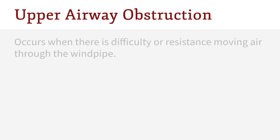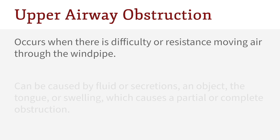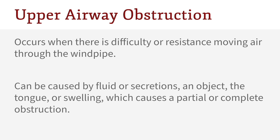Let's review a few definitions. Upper airway obstruction happens when there is difficulty or resistance when air is moving through the windpipe into the lungs. This is caused by fluid or secretions, a physical object, the tongue, or swelling, which causes a partial or complete obstruction.